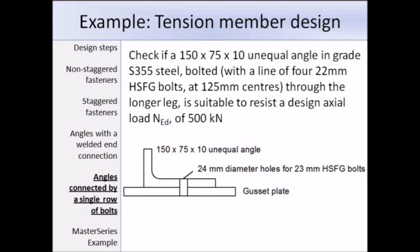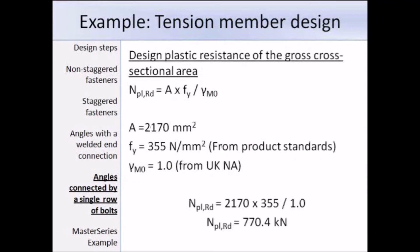First of all we can work out the design plastic resistance. For that we need to use the gross area, which is 2170mm² from the section tables. The yield strength is 355 N/mm² from the product standards, and the partial factor recommended by the UK National Annex is 1. So the design plastic resistance works out as 770.4kN.